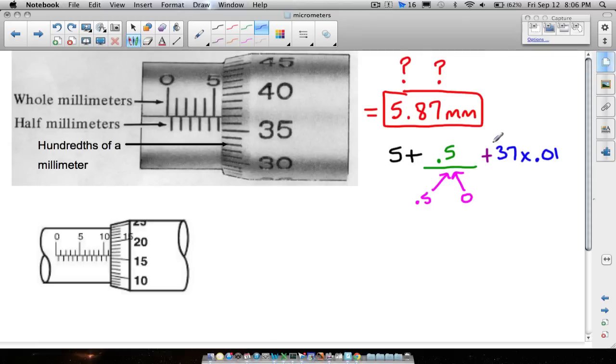So how about we take 37 and you can multiply it by a hundredth, which is 0.01. Now the more you do these, the more you'll probably realize that whatever this number is, in this case 37, we just put a decimal and write 0.37, because if you take 37 times 0.01, you get 0.37. And you want to add these three numbers up, 5 plus 0.5 plus 0.37, and what you'll end up with is 5.87 millimeters. And there's your answer, notice it matches that right there.